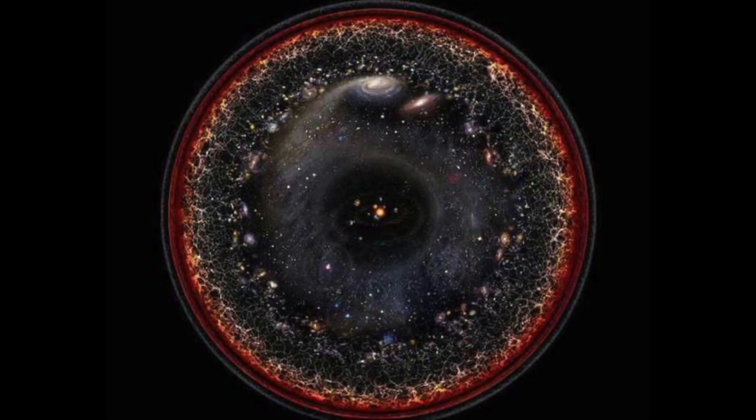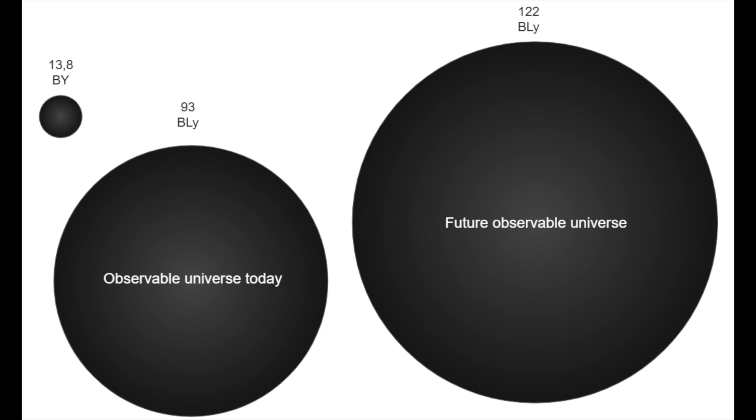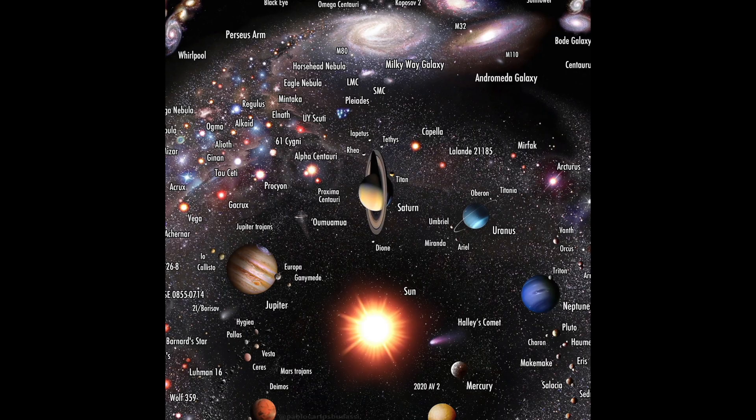The distance to the remotest observable objects equals approximately 14 billion parsecs in all directions. Thus, the observable universe is a sphere with a diameter of about 93 billion light years and with the center inside the solar system, that is, it is centered on the observer.